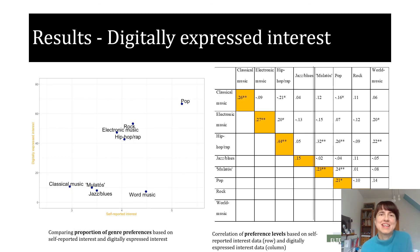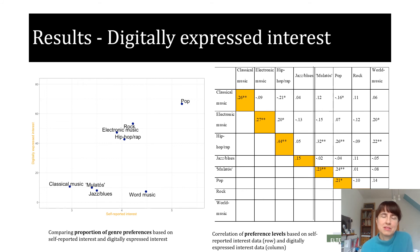Now on our results, just in a nutshell. The first figure shows the relation between self-reported interest data and digitally expressed interest data. The scatter plot shows the proportion of preferences for different genres based on the two measures. As we can see, most of the genres are in a similar position in the two approaches, with the only exception of world music. The other figure shows a moderate correlation between self-reported and digitally expressed level of interest. Again, world music is the only exception with a correlation really close to zero. This preference was measured very differently in the two sources.